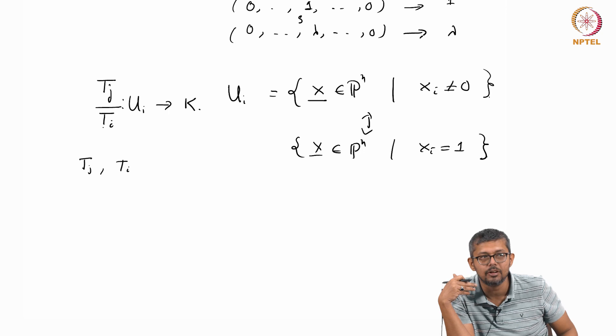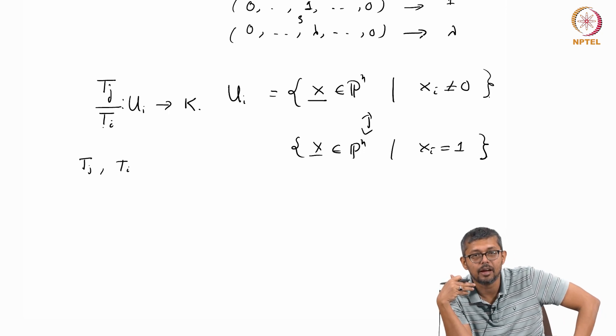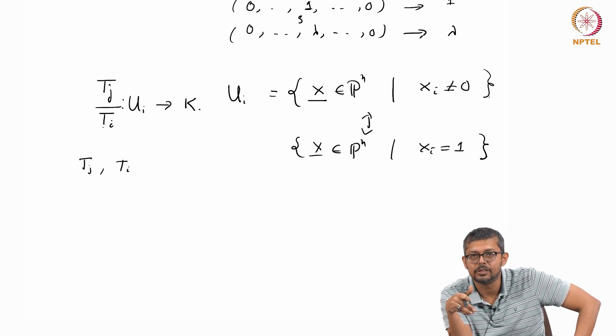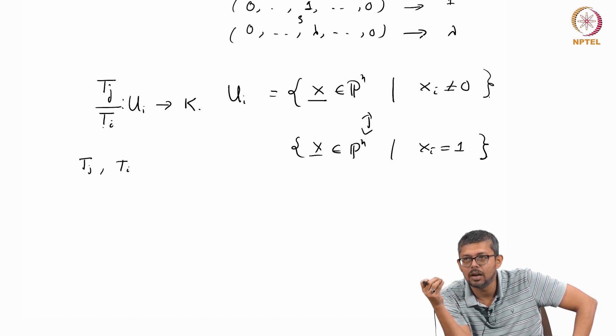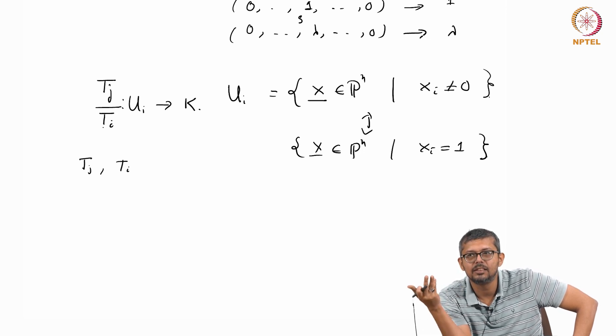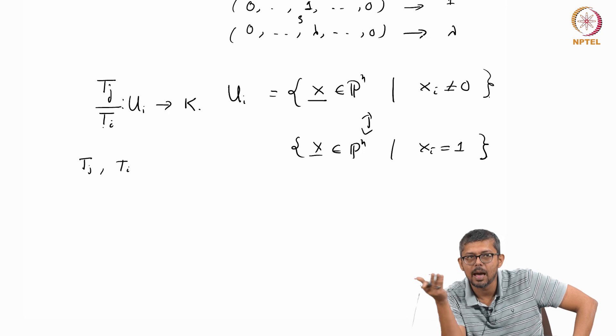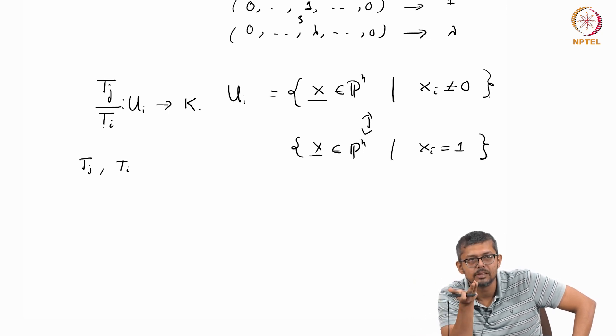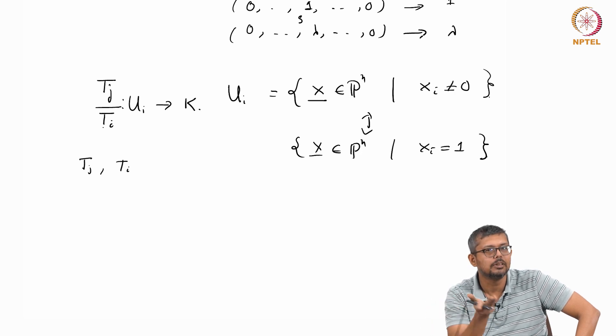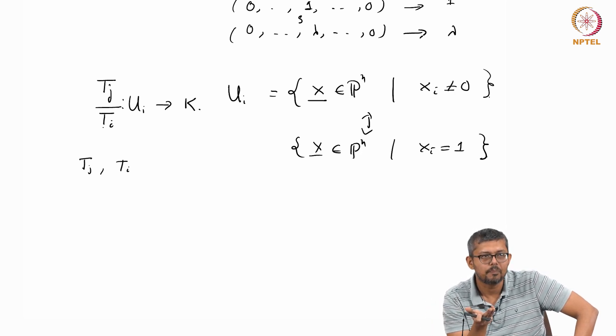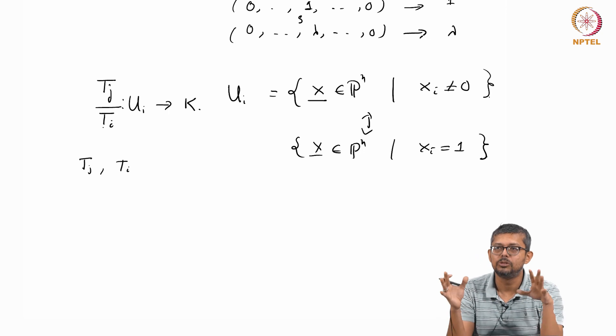So now I will go to the latest definition. I define what is called regular functions on P^n. That means what are the functions locally defined on P^n. And then I define map of projective varieties as exactly similar way. It is a morphism if it takes the regular function to regular function.